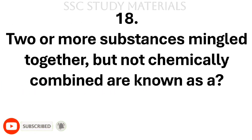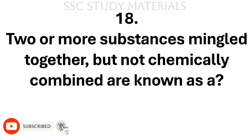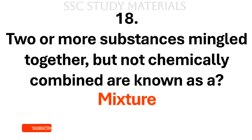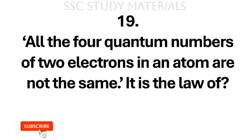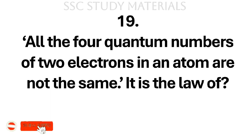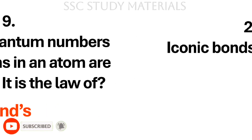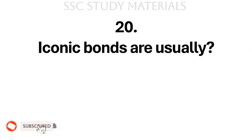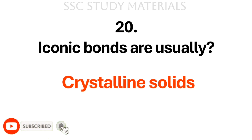Question No. 18: Two or more substances mingled together but not chemically combined are known as a? Answer: Mixture. Question No. 19: All the four quantum numbers of two electrons in an atom are not the same — it is the law of? Answer: Hund's. Question No. 20: Ionic bonds are usually? Answer: Crystalline solids.